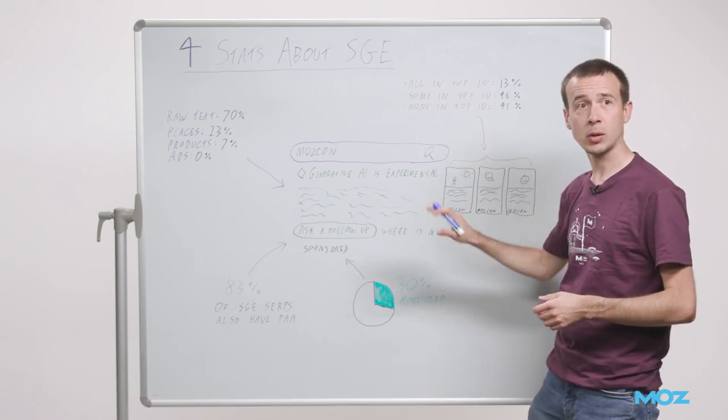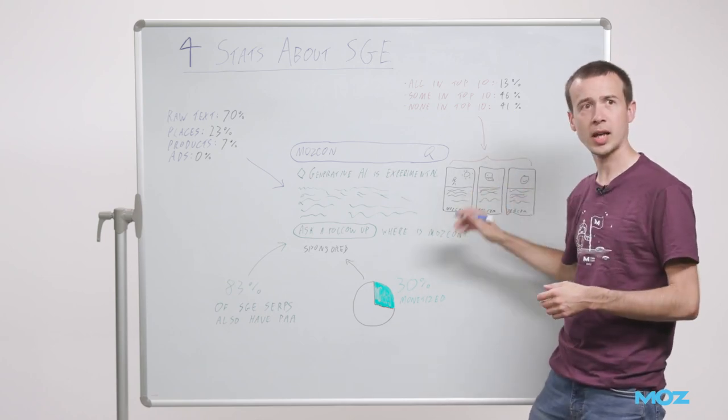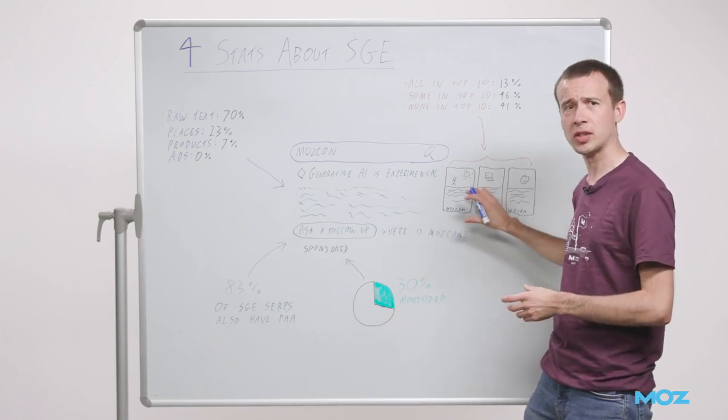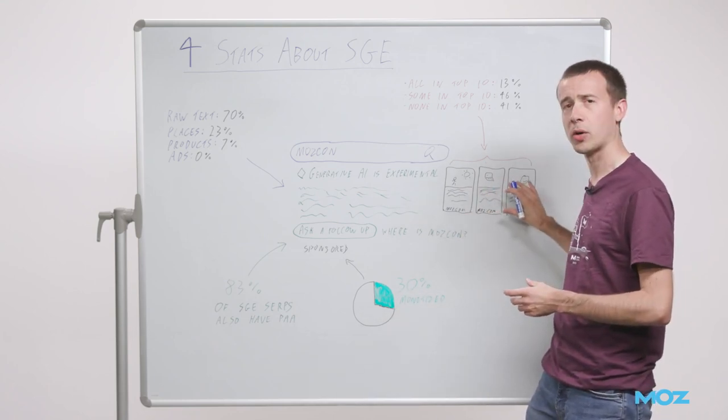And in 41% of cases, there was no overlap at all - none of these links actually appeared in the organic results, which I find very surprising. It shows this is a different system. This is not built on top of organic.